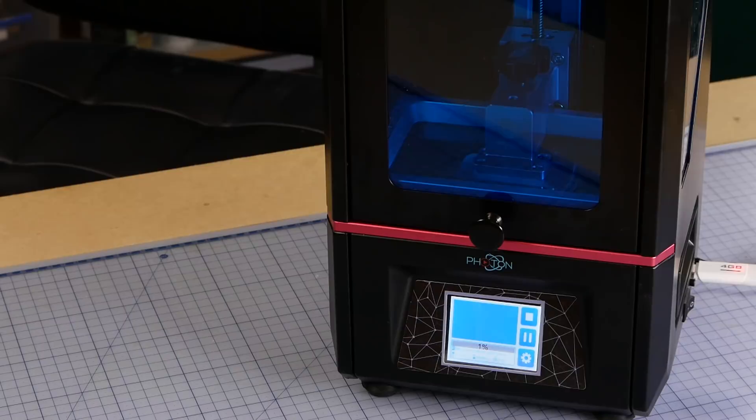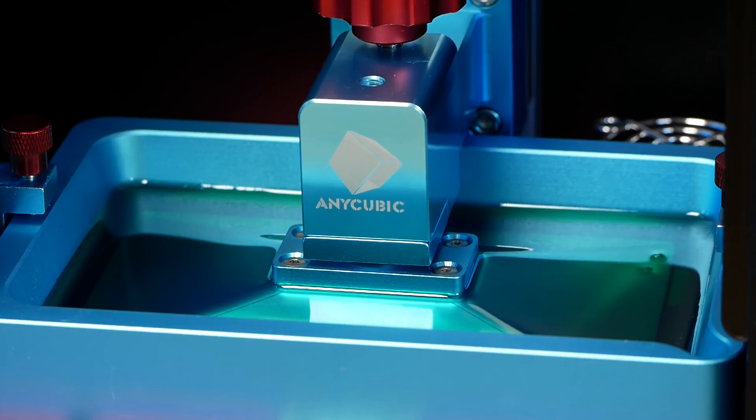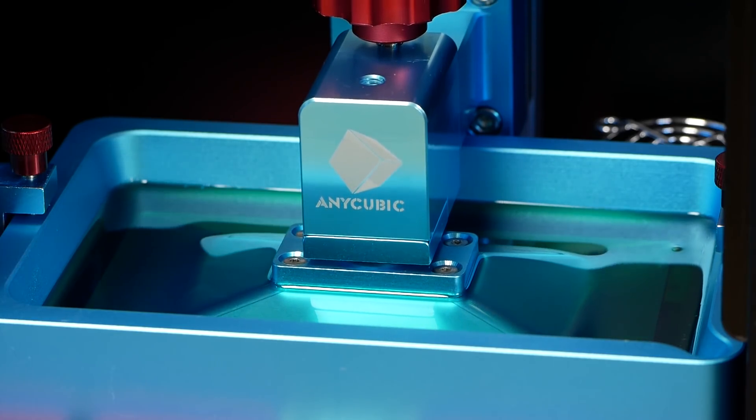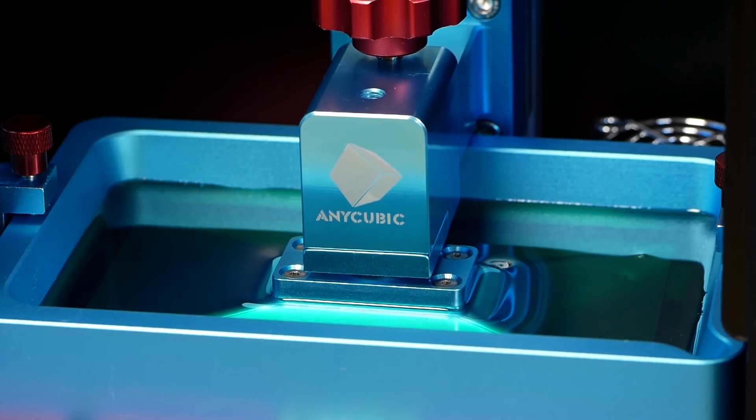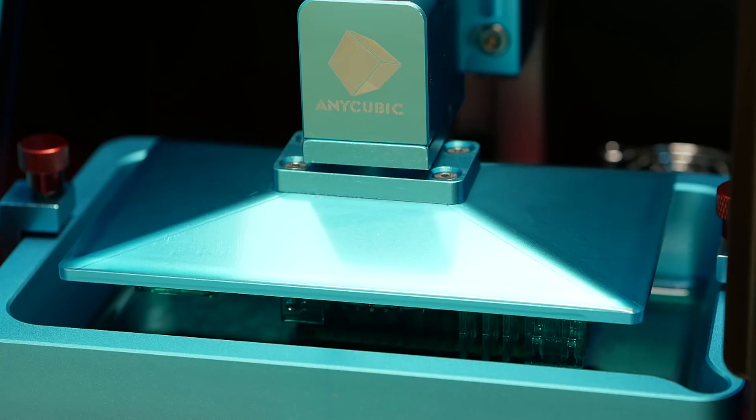The print times vary really only with height. The taller the model the longer it will take to print. As an example a print that has an exposure of 10 seconds per layer will take about nine and a half hours to print if it goes right to the top of the build area. It doesn't matter if it's one model in the build area or 10 models it will always take nine hours and 30 minutes.